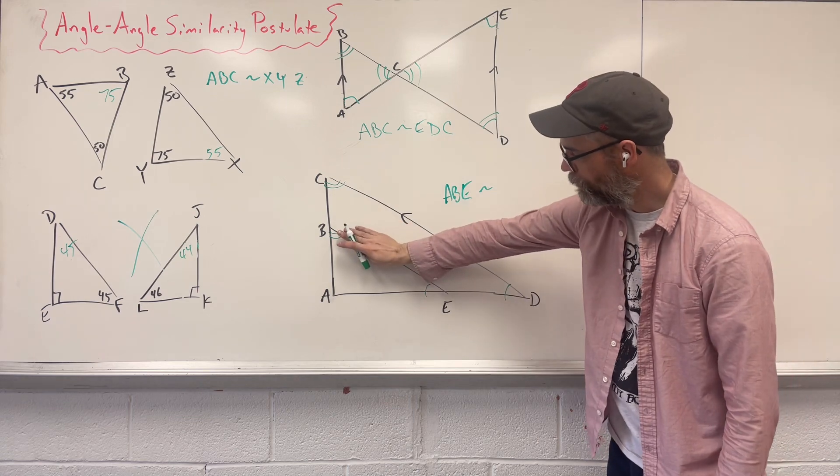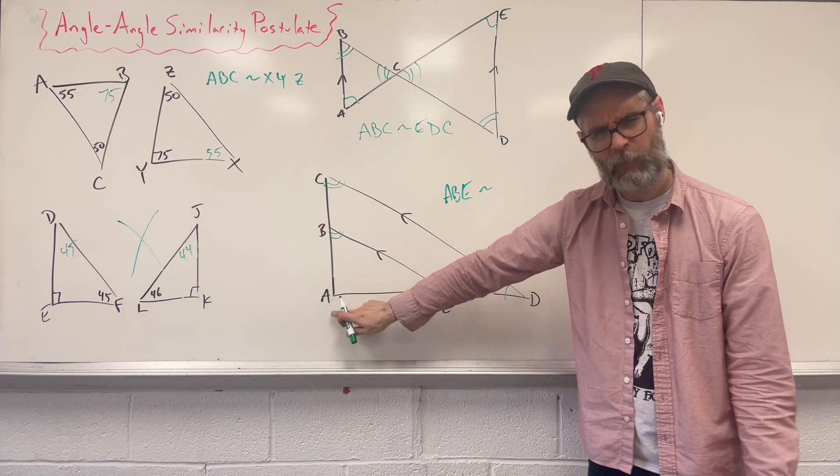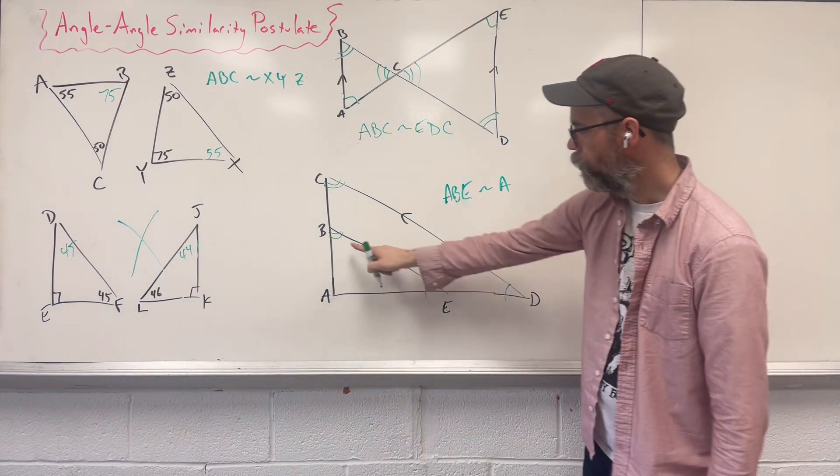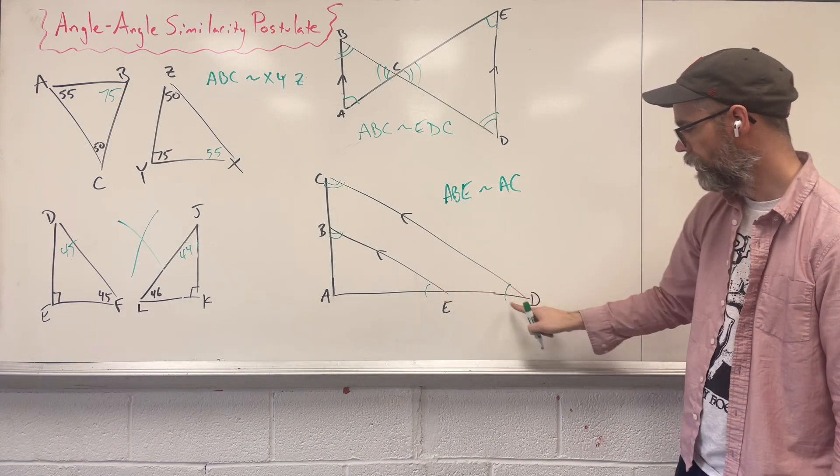So now let's kind of like take this middle line out and look at the big triangle. A and A are in the same exact spot. So we say A. What's in the B position? C. What's in the E position? D.